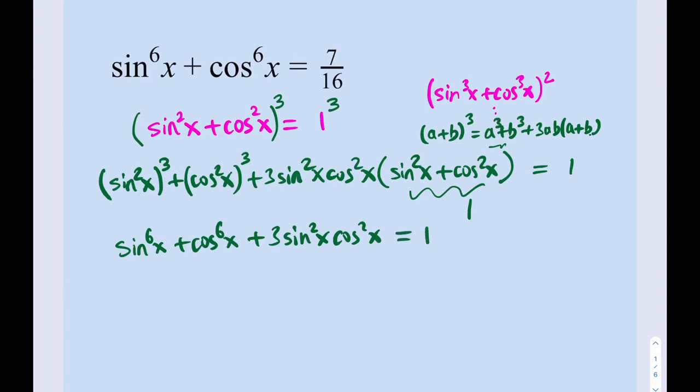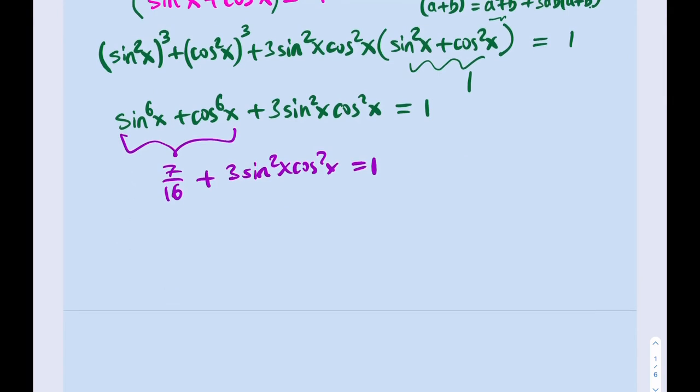Things simplified a little bit. What are we going to do here? We do know the value of sin⁶x + cos⁶x—it's given. So we might as well substitute into our equation. This is going to be 7/16 + 3sin²xcos²x = 1. Then I subtract 7/16 from both sides, and that gives me 3sin²xcos²x = 1 - 7/16, which equals 9/16.